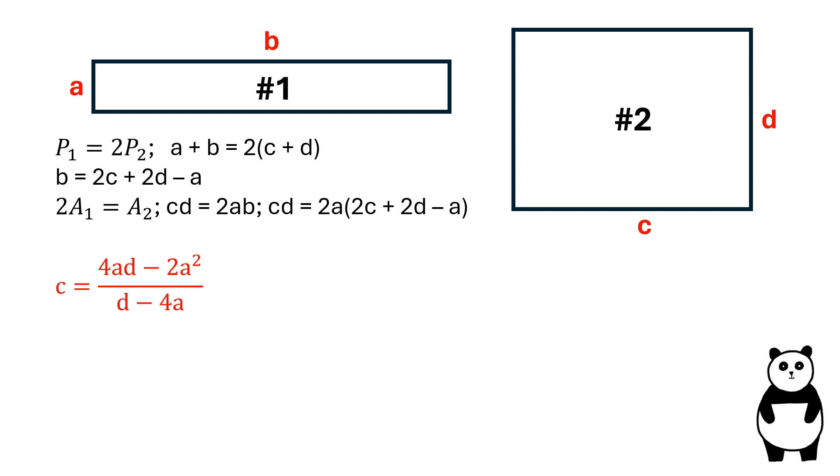In order for C to be a whole number, D minus 4A should be equal to 1. We can rearrange for D. D is equal to 4A plus 1.